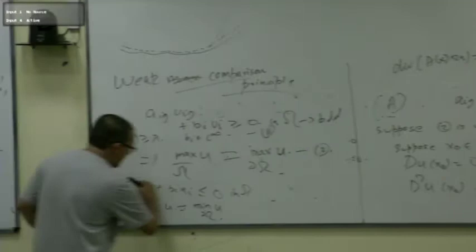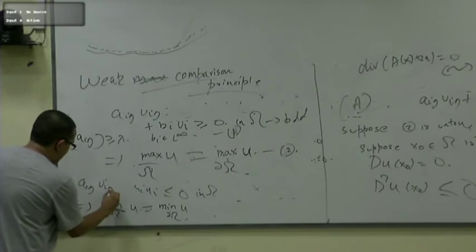Now let me state the Hopf Lemma. Suppose Ω satisfies the interior sphere condition at all points on ∂Ω, and a_{ij}u_{ij} + b_i u_i ≥ 0 in Ω (a subsolution). Suppose u(x₀) = 0 at some x₀ ∈ ∂Ω and u > 0 inside Ω.